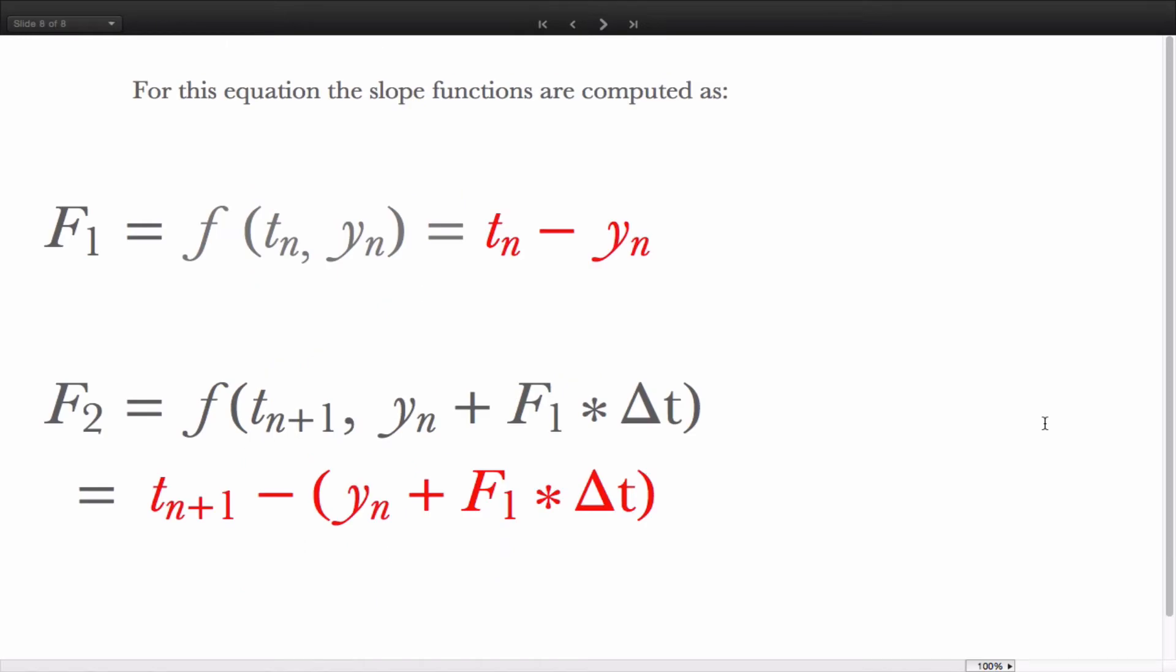For this problem, the equation of the slope functions, F1, is simply the direction field evaluated at the beginning of the interval, which is TN minus YN. F2 is our prediction of the slope at the end of the interval, which is the T value here, which is now TN plus 1, minus our predicted Y value, YN plus 1 plus change in Y.